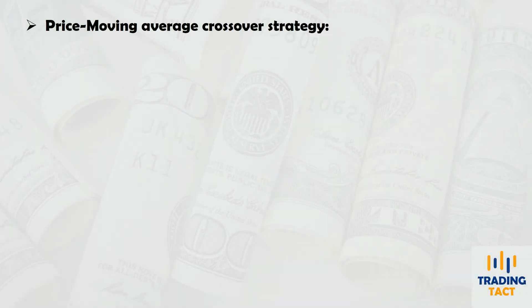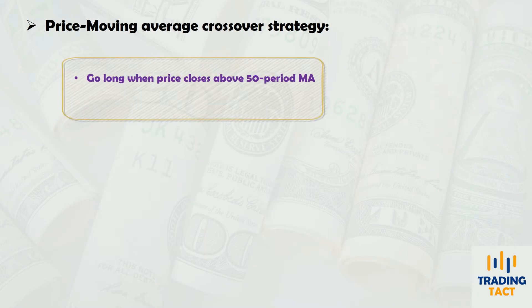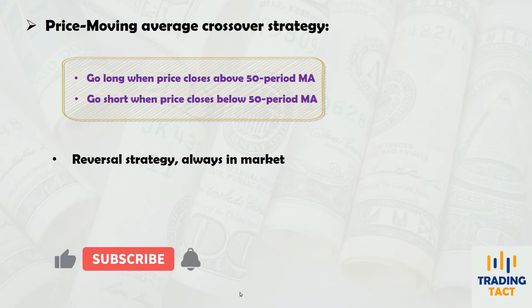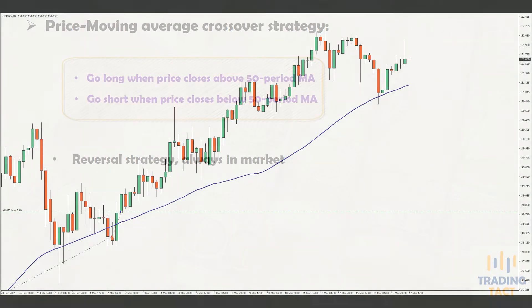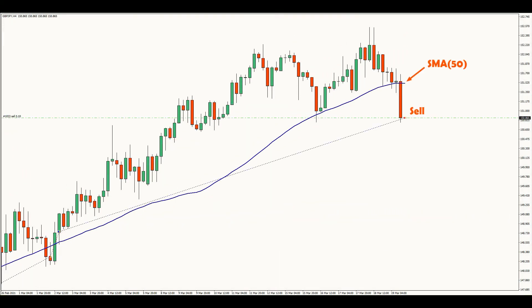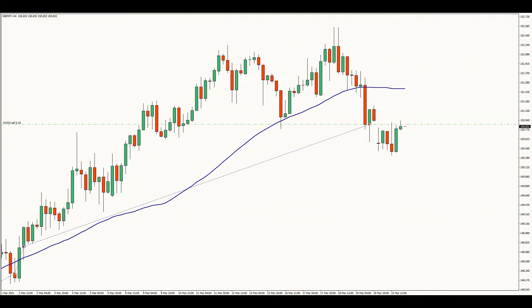Each moving average will be used to create a crossover trend-following strategy. I will go long when price closes above the moving average and short when price closes below it. These reversal strategies are always in the market, meaning the exit for longs is also the entry for shorts. Here's how the simple moving average crossover strategy plays out in real time.